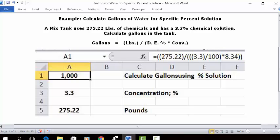In the formula bar, type this formula: equal sign, open parentheses, 275.22, close parentheses, division key, open parentheses, 3.3, close parentheses.